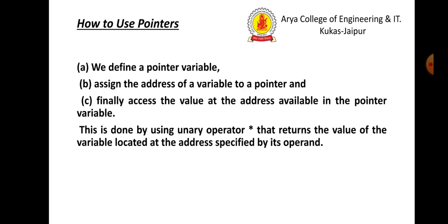Now, how to use a pointer? There are three basic steps. First, we define a pointer variable. Second, assign the address of a variable to a pointer. Third, finally access the value at the address available in the pointer variable. This is done by using the unary operator asterisk that returns the value of the variable located at the address specified by its operand. We learn all these three basic steps through our example.